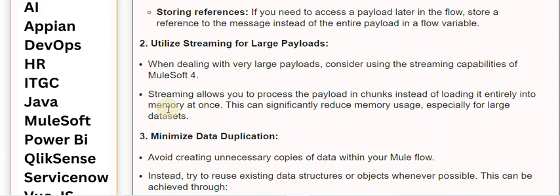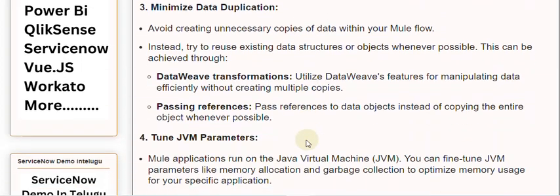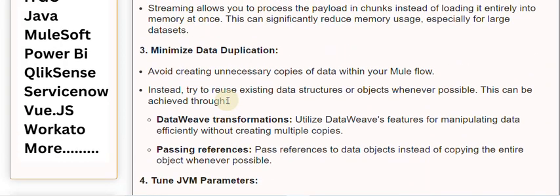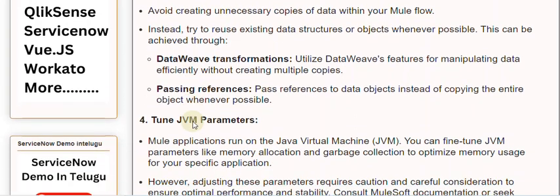Tip 3: Minimize data duplication. Avoid creating unnecessary copies of data within your Mule flow. Instead, try to reuse existing data structures or objects whenever possible. This can be achieved through DataWeave transformations — utilize DataWeave's features for manipulating data efficiently without creating multiple copies. Pass references to data objects instead of copying the entire object whenever possible.